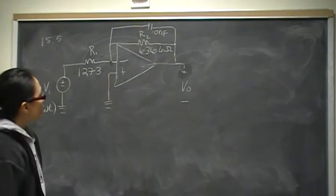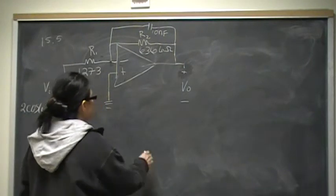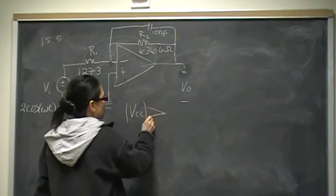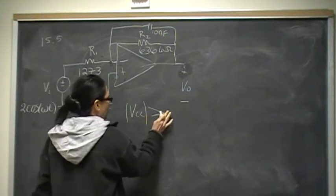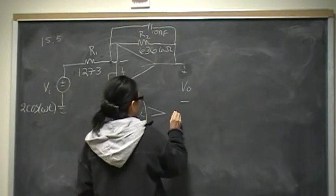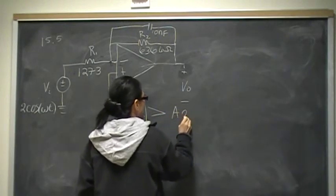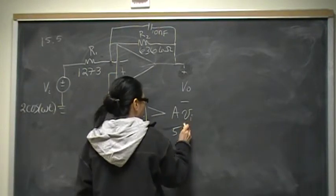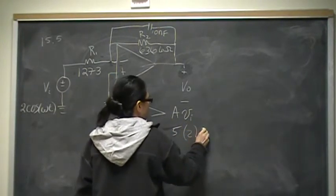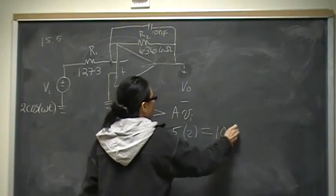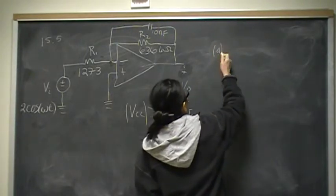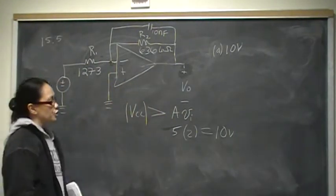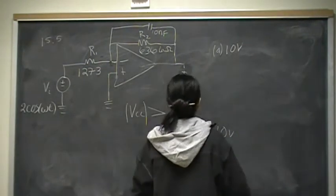We recall that an op-amp is in its linear region when the output is less than the gain times the input voltage. Our gain is 5 and our input voltage is 2, so the op-amp for part a is operating in the linear region when its magnitude is under 10. That's part a.